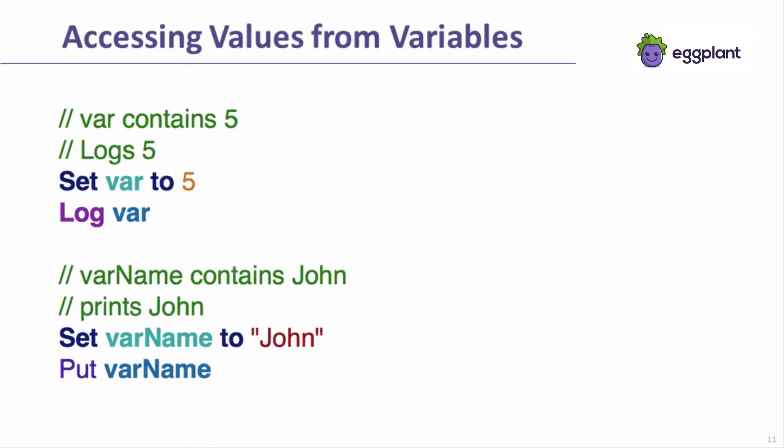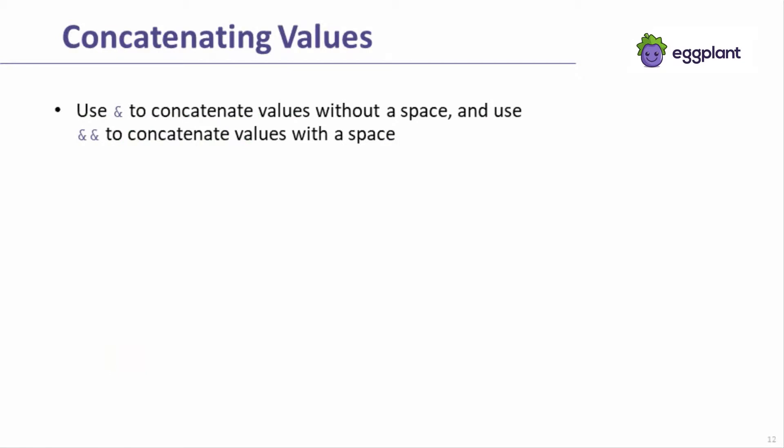Accessing values stored in variables is easy and can be done using commands such as the log command or the put command. Concatenation provides a way to combine values, including those stored in variables, together with other values and variables. Ampersand is used for concatenation. A single ampersand concatenates the values without a space, and a double ampersand concatenates with a space.